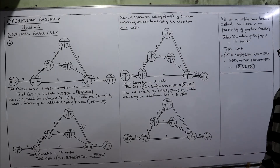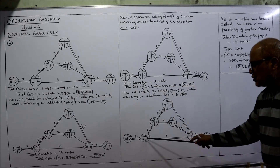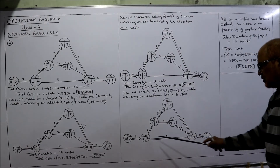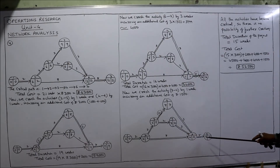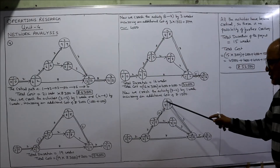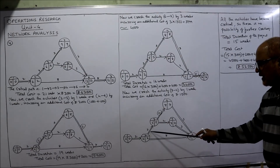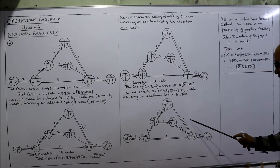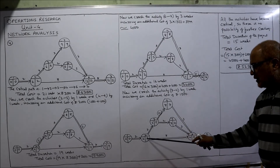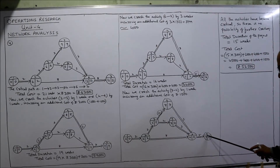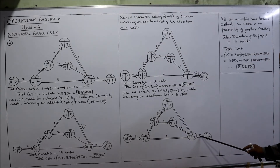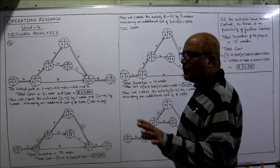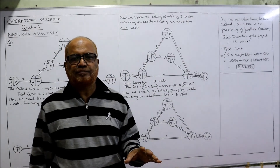Now observe: all paths have become critical. Path 1→2→6→7: 2+8=10, 10+5=15. Path 1→2→3→4→6→7: 2+3+2+3+5=15. Path 1→2→3→5→6→7: 2+3+2+3+5=15. All paths give 15, so all activities are now critical. There is no further possibility of crashing.